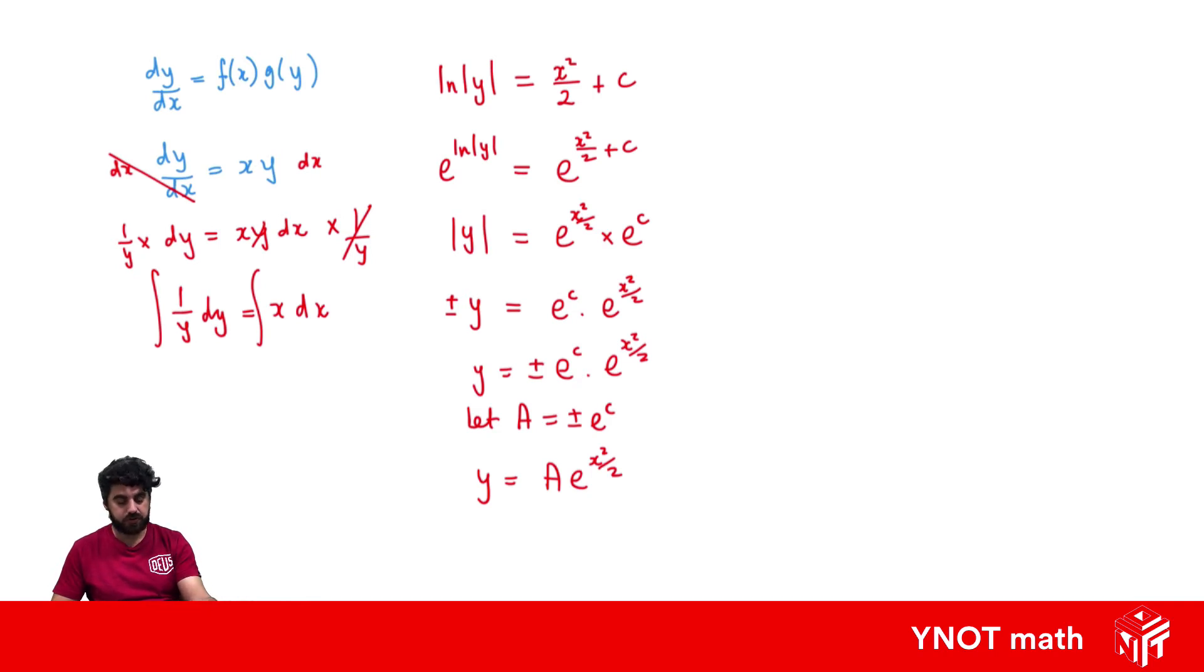And this is just a general solution. If you wanted a specific solution, we need initial conditions. But we're going to have a look at another example now. So let's look at the differential equation dy dx equals 1 plus y squared multiplied by e to the x.